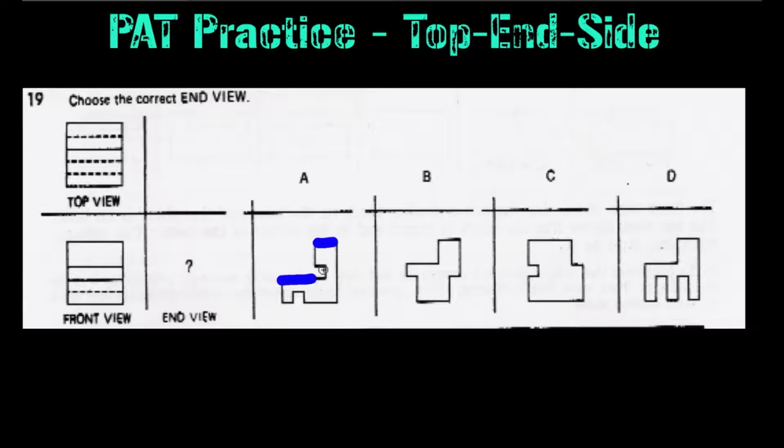The vertical lines are the lines that represent the dotted lines. So as you can see, we have a vertical line here, a vertical line here, and a vertical line here, which represents the three dotted lines in the top view. So A is consistent so far with the top view.